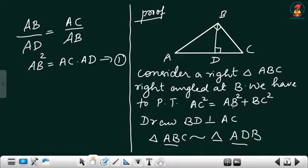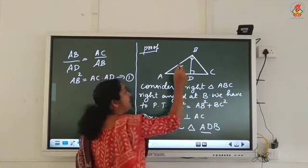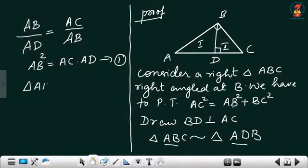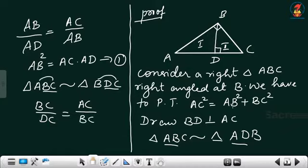Similarly, we apply triangle ABC similar to triangle BDC. Here we need BC, so BC/DC = AC/BC, which gives us BC² = AC × DC. That is the second equation.